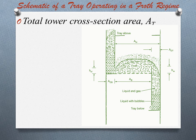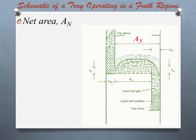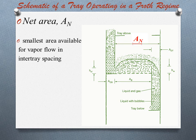That is the tower without trays or downcomers. Next is net area, which is denoted by AN, also called free area. It equals the total tower cross-sectional area AT minus the area at the top of the downcomer ADT. The net area represents the smallest area available for vapour flow in the inter-tray spacing.